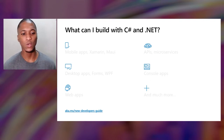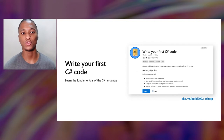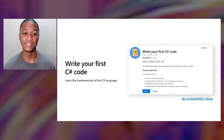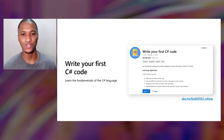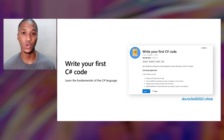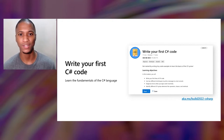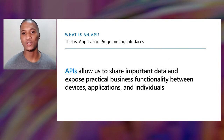We start this journey using one of our Learn modules where you can write your first C-Sharp code. The biggest benefit of this module is that you can write your own code using the code editor embedded in the browser — no need to download Visual Studio on your PC. You'll establish the basics, and your next step is to build an API.